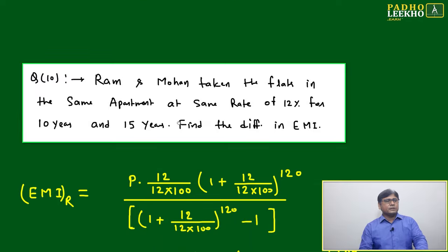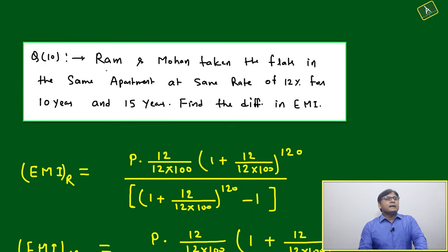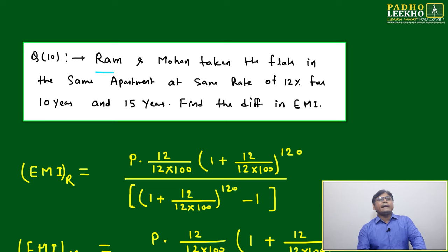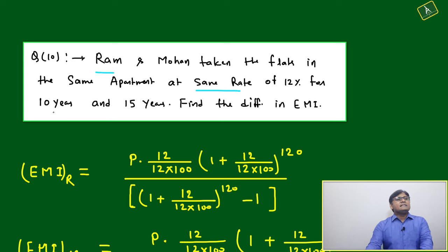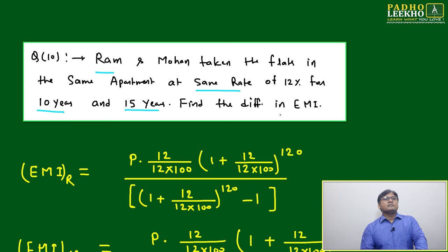Now we'll come to question number 10. The question is: Ram and Mohan take flats in the same apartment at the same rate of 12% for 10 years and 15 years. Find the difference in EMI.